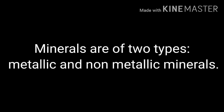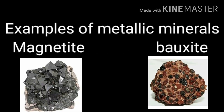Minerals are of two types: metallic minerals and non-metallic minerals. Minerals from which we get metals are called metallic minerals. Examples of metallic minerals are magnetite, bauxite, hematite, etc.